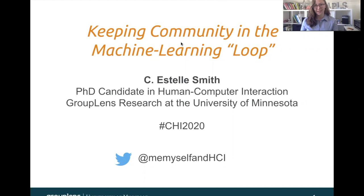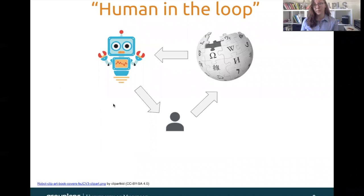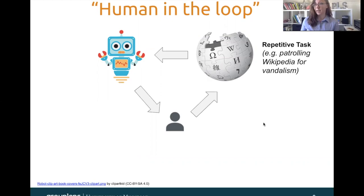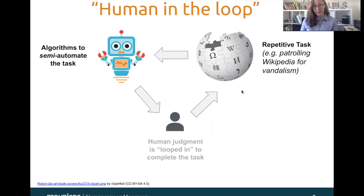Typically, when we're talking about human-in-the-loop systems, we have three major components. The first is some type of a repetitive task that needs to happen continuously and often in real time — for example, patrolling Wikipedia for vandalism. The second is some type of an algorithm that we're using to semi-automate the task. And finally, we loop in a human to complete the task, because the general assumption is that human judgment is better than machine judgment.